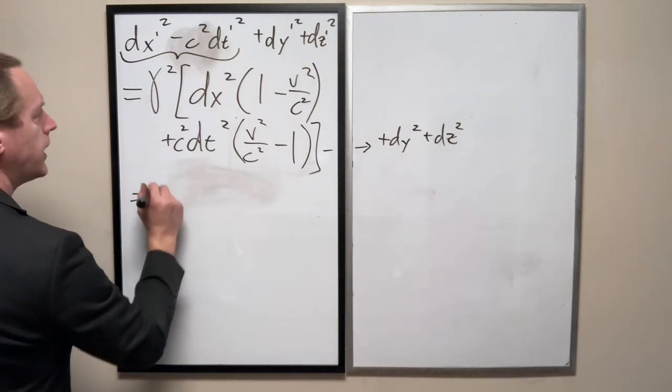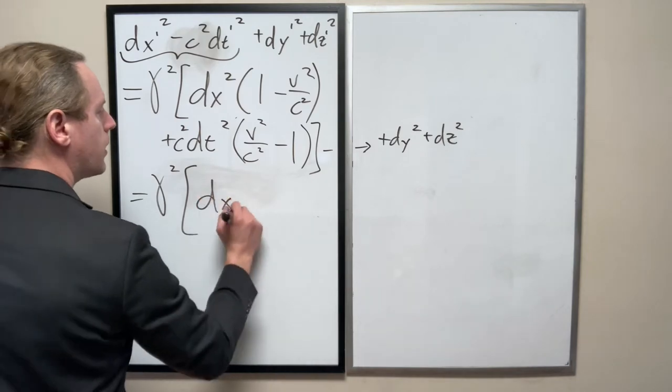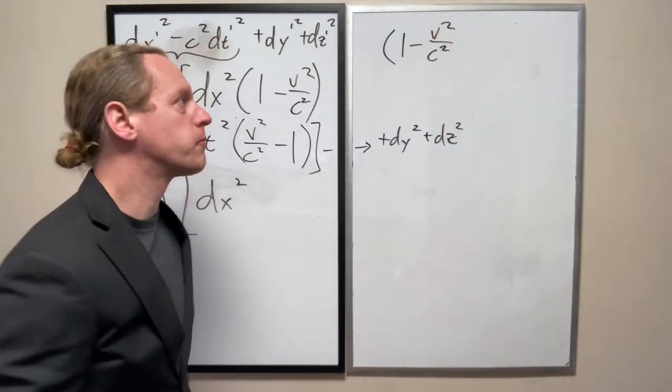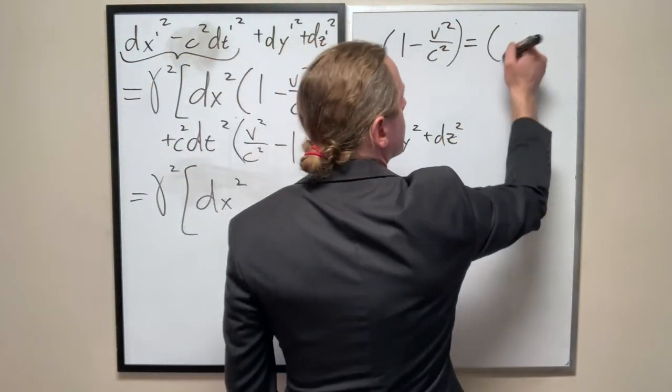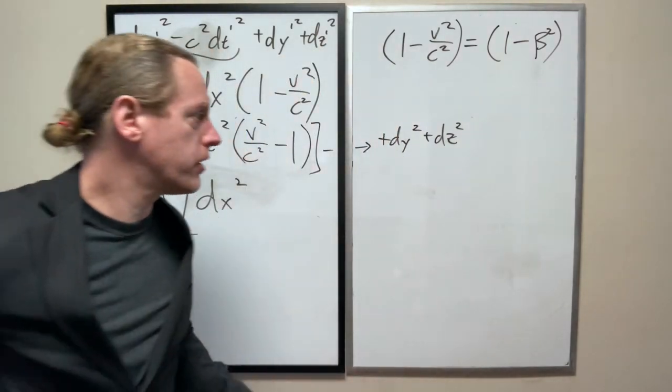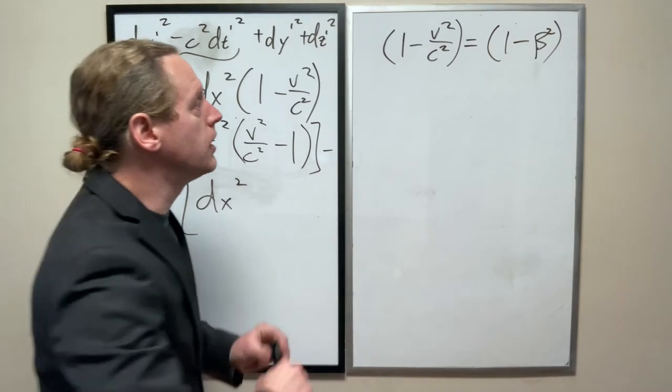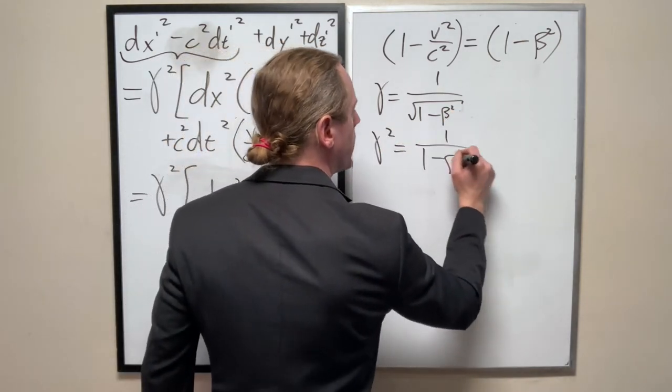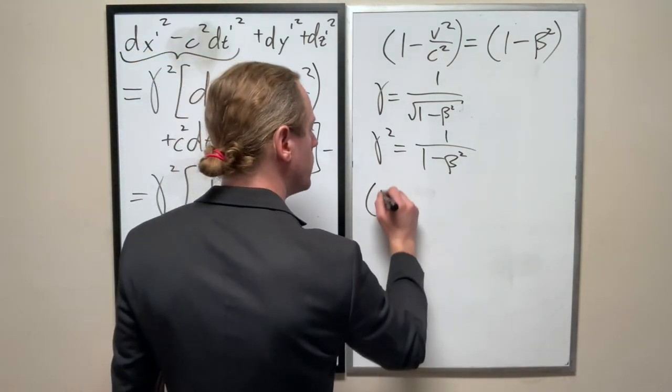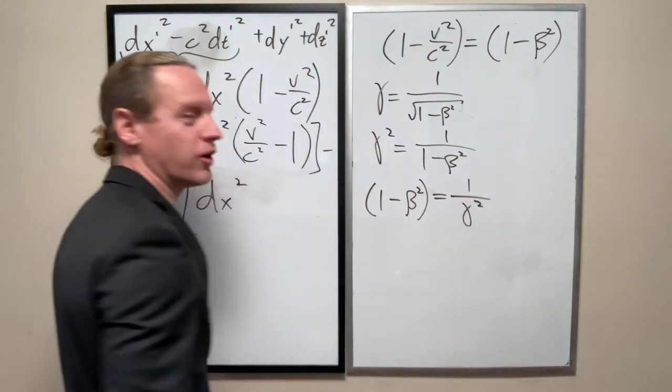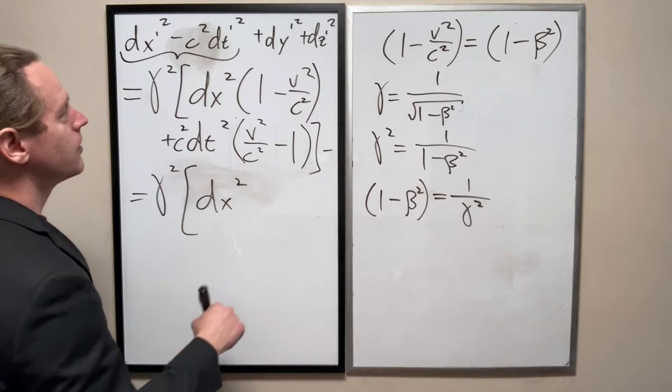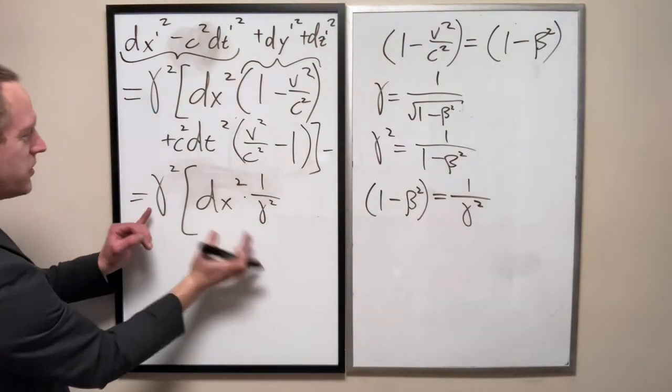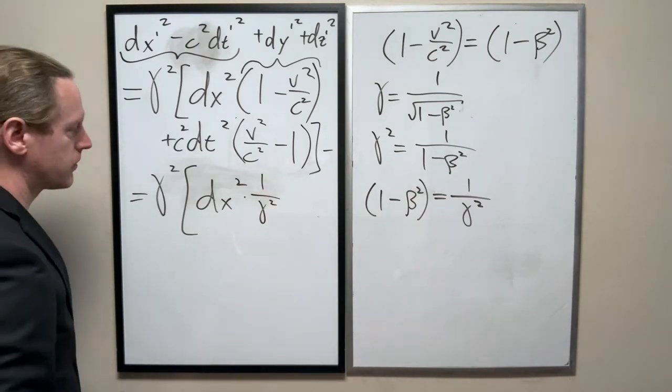Okay. So, a couple things. I can rewrite this as dx squared. Now, what is 1 minus v squared over c squared? That's the same thing as 1 minus beta squared. And that looks really familiar. I'm just getting rid of that all together. We'll add those back in when we need. Now, remember, gamma is 1 over the square root of 1 minus beta squared. So, gamma squared is 1 over 1 minus beta squared. So, 1 minus beta squared is 1 over gamma squared. Do you see where that works out? So, I have this thing here, which is exactly what I just calculated. And notice here we have the gamma squared up front. That's exactly going to be canceled by that.